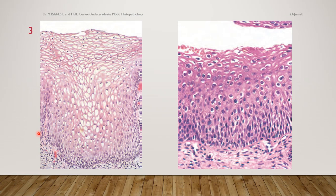Now as we move on to these photomicrographs, this one is a normal one for comparison and this one here is the abnormal one. The change we most clearly see from normal to abnormal is that the nuclei have increased in size and become darkened — hyperchromatic. Some of the nuclei have irregular contours; they're not as round as those seen in the normal ectocervix.